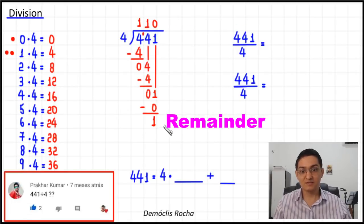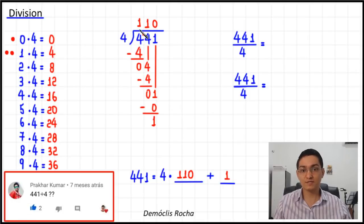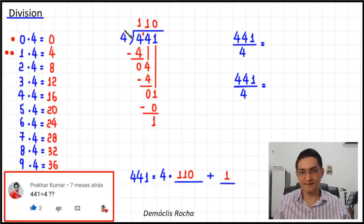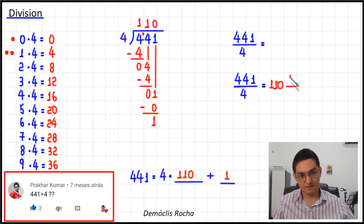That means the whole quotient when dividing 441 by four is 110, and the remainder is one. For instance, if you want to divide 441 books equally among four schools, each school receives 110 books and there is one book left over — you cannot divide one book equally among four schools. To check, multiply four times 110 and then add one; the result should be 441. This also means the result can be expressed as 110 and one-fourth.